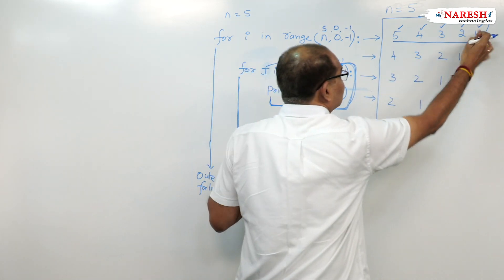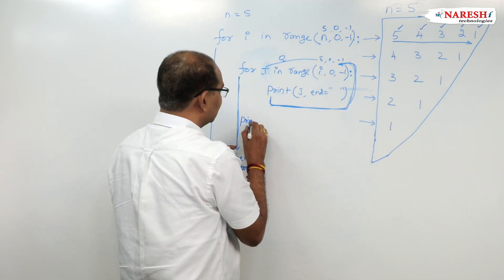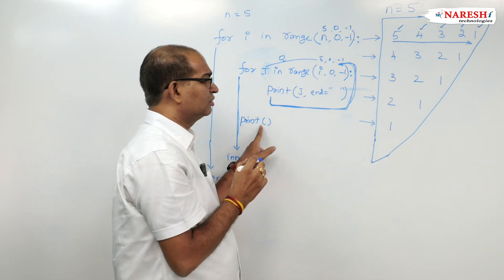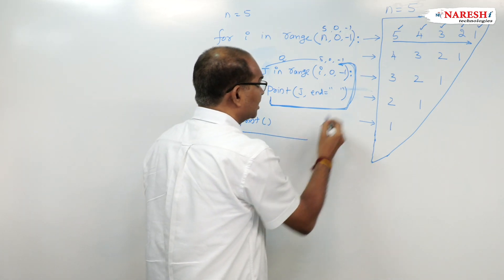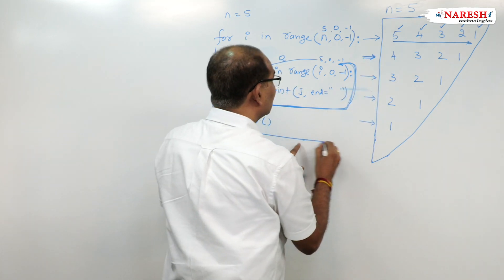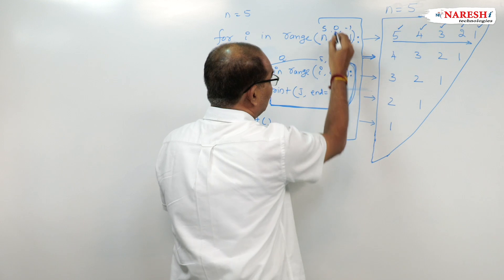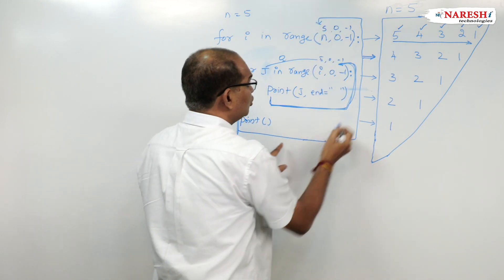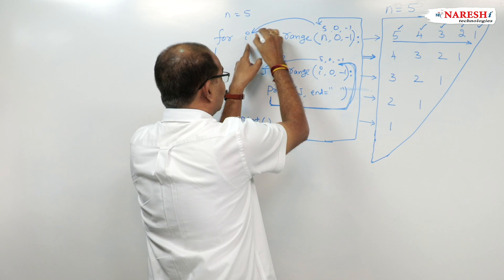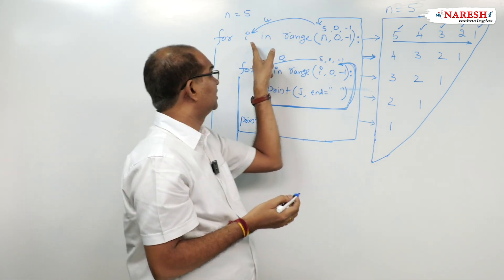After the inner for loop completes, I need to bring the cursor down to the next line. So I write print() here. Whenever I say print(), the cursor moves to the next line. Then we go back to the outer for loop, and i becomes 5 minus 1, which is 4.